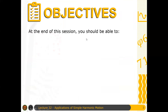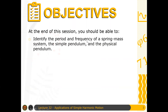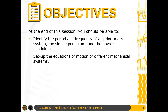Here are the objectives of this topic. At the end of this session, you should be able to: first, identify the period and frequency of a spring-mass system, the simple pendulum, and the physical pendulum — three systems in total. The spring-mass system we already discussed; that was our motivation for simple harmonic motion. But the simple pendulum and physical pendulum, we haven't discussed yet. And then after that, we set up the equations of motion of different mechanical systems, especially when they are oscillating — because you will need that in one of the problems in FQ5.